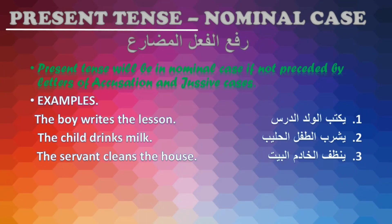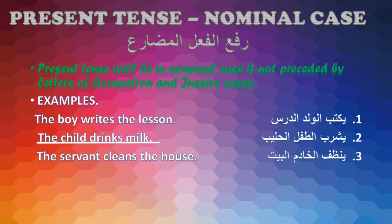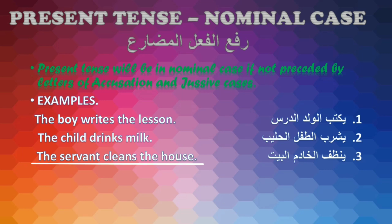Now, present tense nominal case, rafa' fil-ul muzari. Present tense will be in nominal case if it is not preceded by letters of accusative case or jussive case. For example, Yaktubu al-waladu al-darsa — The boy writes the lesson. Yashrabu al-tiflu haliban — The child drinks milk. Yunawwifu al-khadimu al-bayta — The servant cleans the house.